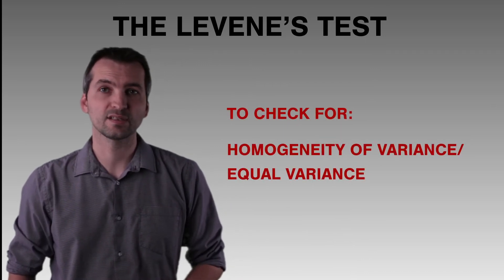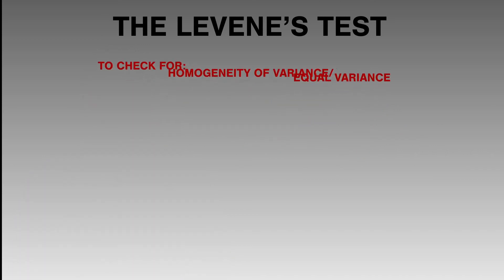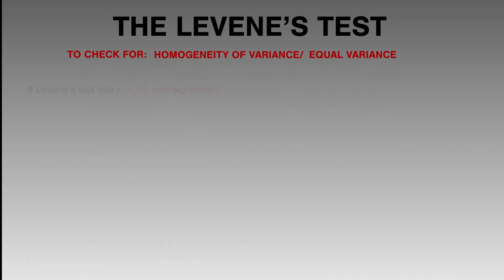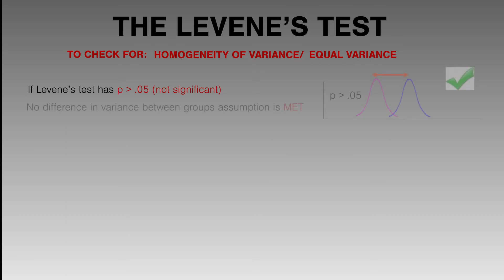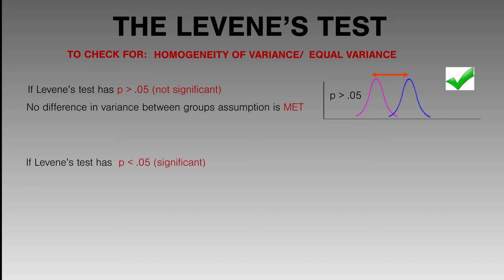Levene's test is the second assumption of parametric testing. If the p-value from Levene's test is more than 0.05, the result is not significant, meaning there is no difference between the variances of the two groups, and the assumption of homogeneity of variance has been met. However, if the p-value is smaller than 0.05, the test is significant, indicating a difference in variance between groups, and the assumption has been violated — requiring us to adjust our results carefully.